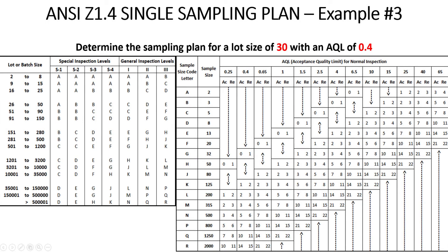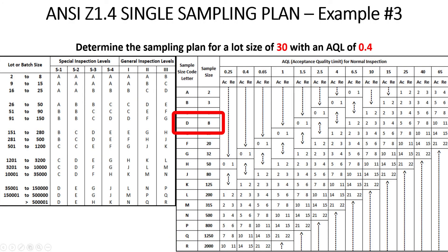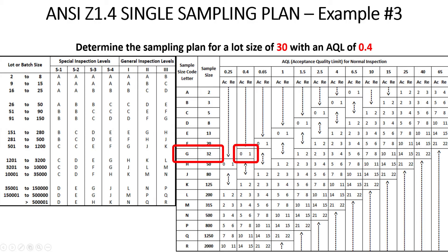Here's another nuance: with a lot size of 30 and an AQL of 0.4, we find sample size code letter D, which gives a sample size of 8. But at AQL 0.4, there's another downward arrow, and we must follow it all the way down to code letter G — a sample size of 32. Since our population is only 30, we effectively must test every piece in the lot, accepting only with zero defects.